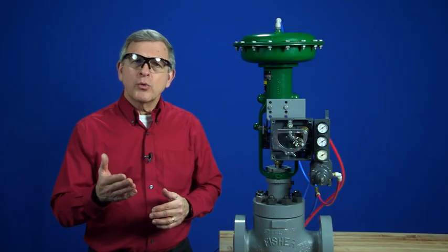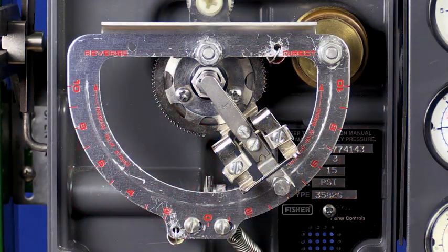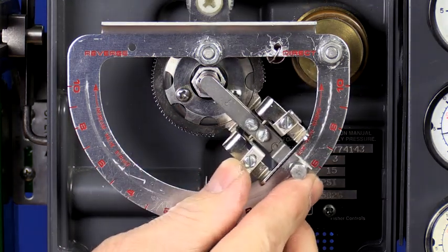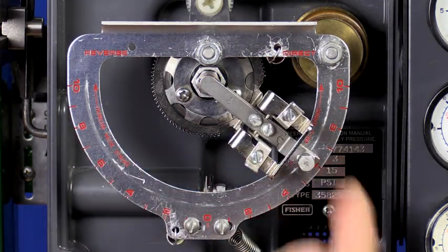To get started, we'll move the flapper assembly to the mid-range of its travel on the direct side of the summing beam, or about to the number six on the scale.